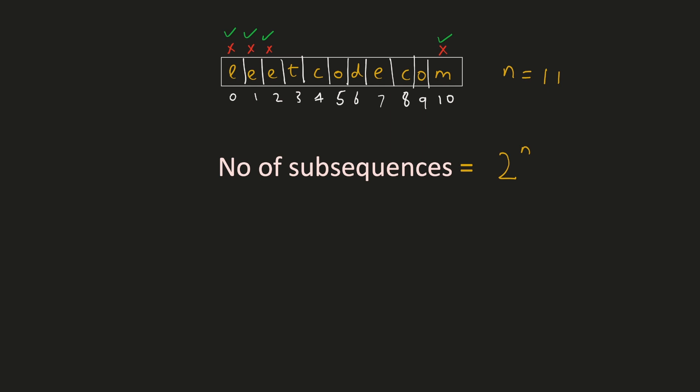Each different subsequence can be represented by the binary representation of an n-bit number, where 0 might represent that character being ignored and 1 might represent that character being included in the subsequence. Let's take a look at an example and try to create the subsequence from a bitmask. We have 11 bits for the 11 characters in our word.